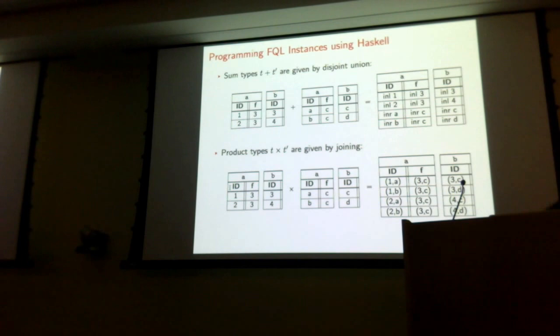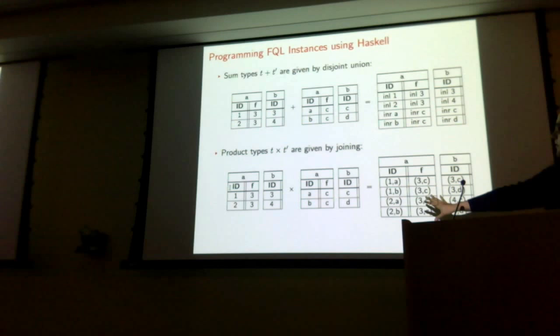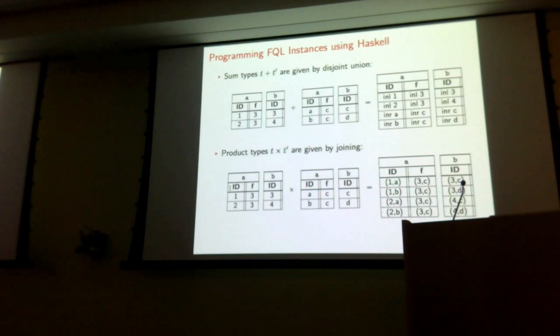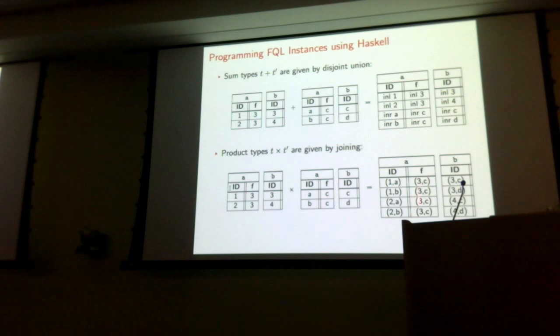For products, your entries are pairs where the left component came from the left table and the right component came from the right table. Another thing to notice in this example is that for the foreign key, they're all the same here — because in A your foreign key was all 3, and in the other it was all C, so your foreign keys here are all (3, C), even though in table B you have four different possible values.